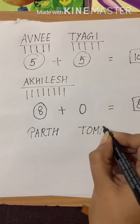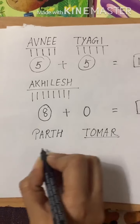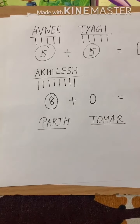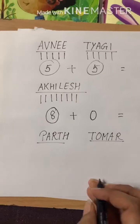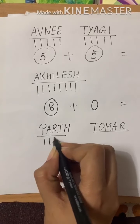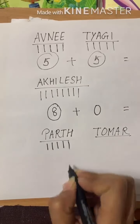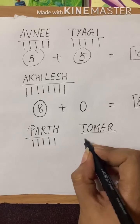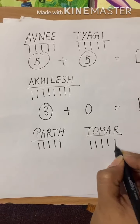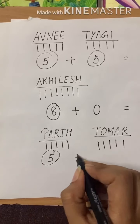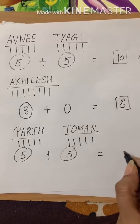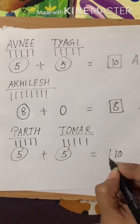I think most of the students in my class have about 5 alphabets in their name. Here: 1, 2, 3, 4, 5. Tomer: 1, 2, 3, 4, 5. Again we have got 5 plus 5, and that is 10.